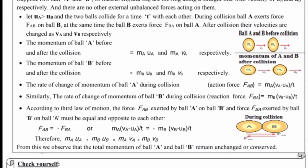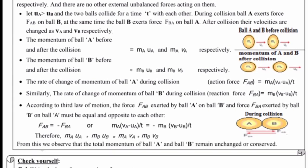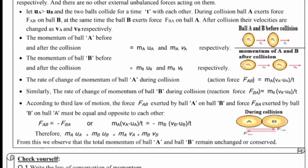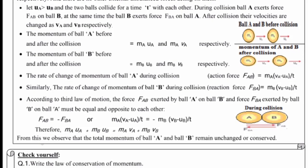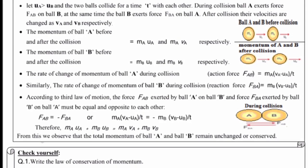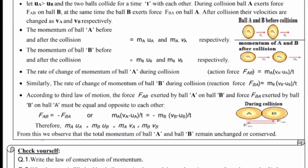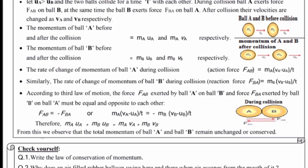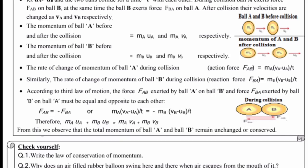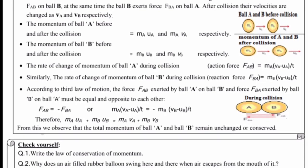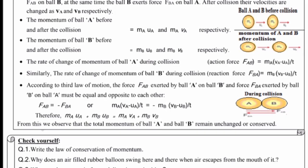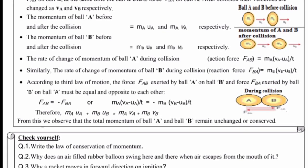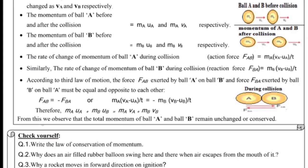According to third law of motion, the force FAB exerted by ball A on ball B and force FBA exerted by ball B on ball A must be equal and opposite to each other. FAB is equal to minus FBA.